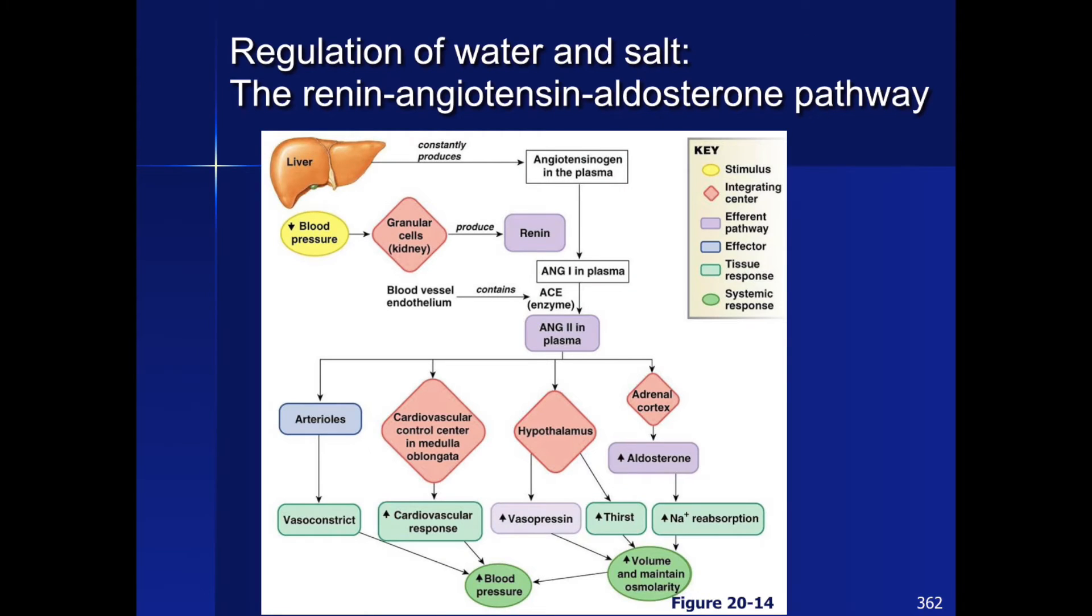Here is a chart that you can study as a review of the renin-angiotensin pathway, which helps to regulate water and salt concentrations. Angiotensinogen is always being produced by the liver. When renin is present due to low blood pressure, the rest of this pathway is stimulated, leading to increased vasopressin, thirst, and sodium reabsorption. This helps the body to increase internal fluids.